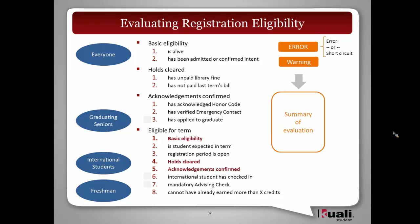The list is ordered, so there is a sequence. For each line item — one: is alive, two: has been admitted — each can refer to what we're calling a population. Populations are dynamic people sets, really defining a query that defines a group of students. You might have one that says 'everyone' for checks like is-alive and has-been-admitted. Further down, for graduating seniors, we want to make sure they've applied to graduate — so that check applies only to that population. This lets us have checks specific to certain populations.